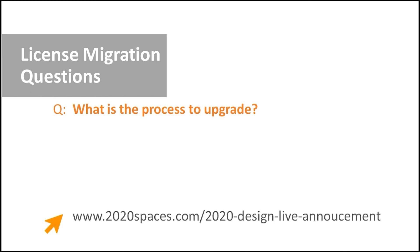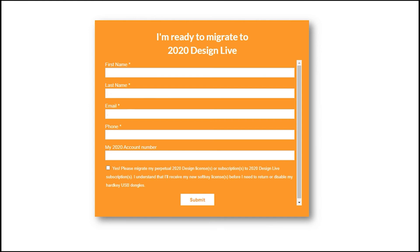What is the process to upgrade? On our website, you will find a simple form indicating you are ready to migrate or would like further information. You enter a few details, and one of our agents from the migration team will call you back. On the website, you will also find features and videos related to migrating to Design Live.